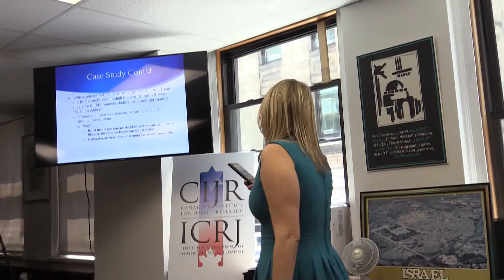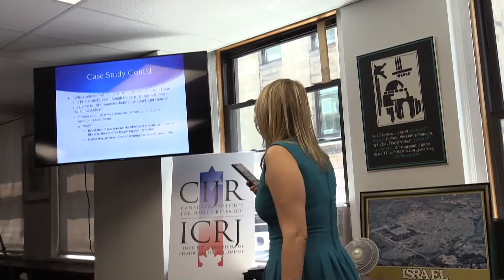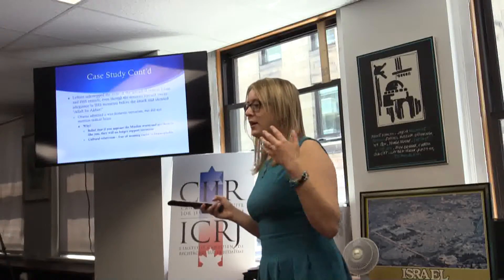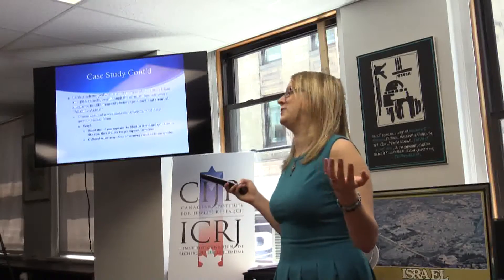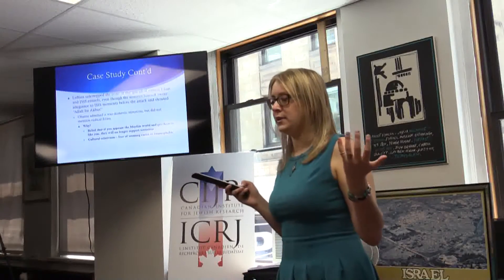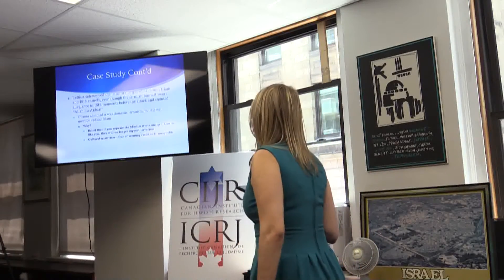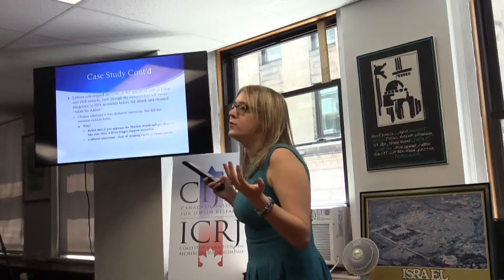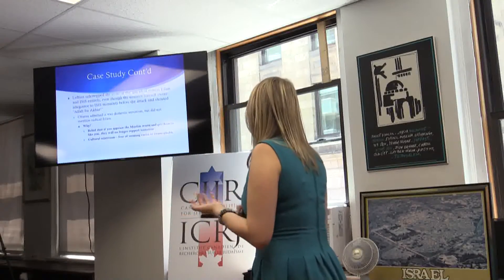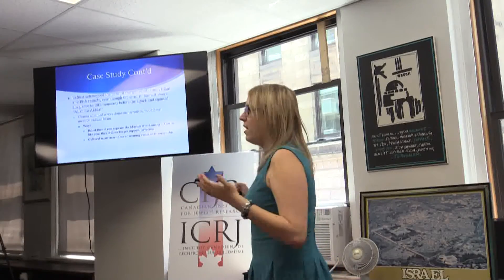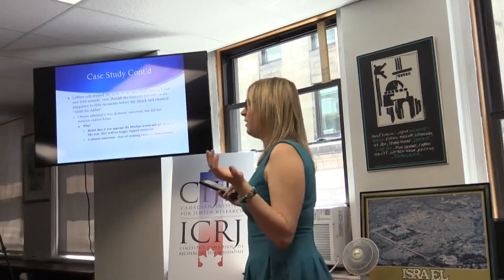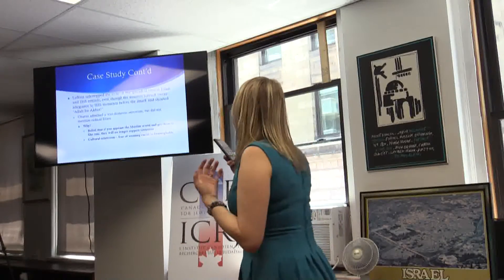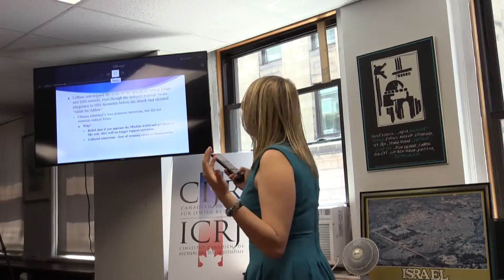On the left side, they completely sidestep the spread of radical Islam and ISIS, even though the terrorist pledged allegiance to ISIS, the FBI called it a terrorist attack, Obama called it a terrorist attack, and Hillary Clinton called it a terrorist attack. Why did Obama not mention 'radical Islam'? There's a belief that appeasing the Muslim world will make them stop supporting terrorism — obviously being kind costs nothing, but putting our heads in the sand makes us sitting ducks. Cultural relativism also contributes — a fear of seeming racist and Islamophobic.